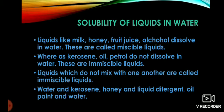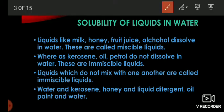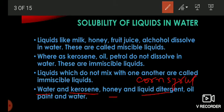Liquids which do not dissolve with one another are called immiscible liquids. Examples of immiscible liquid pairs include water and kerosene, honey with liquid detergent, honey with corn syrup, and oil paint and water. If we mix water and kerosene, they do not mix well. Honey and corn syrup also do not mix. These are immiscible.